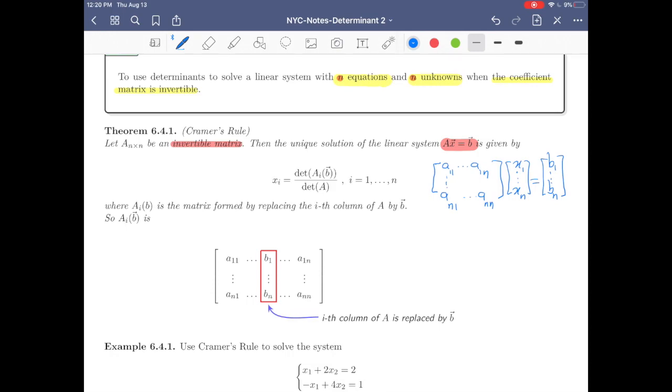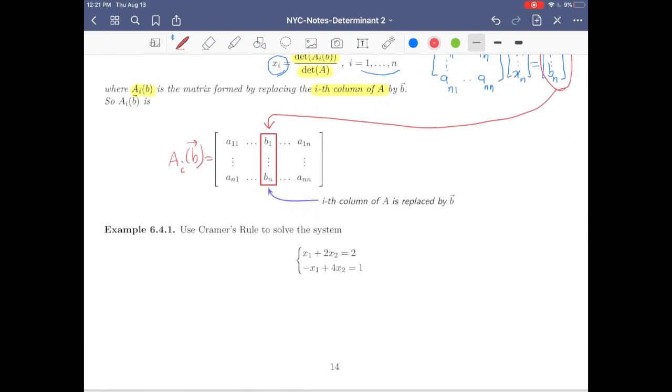Then you can easily find the solution for x1, x2, x3, and xn. The answer is: xi equals the determinant of A_i(b) over the determinant of A. What is A_i(b)? A_i(b) is the matrix formed by replacing the i-th column of A by b. You take the i-th column of A and replace it by this b here, putting it in the i-th column of A—that gives you A_i(b).